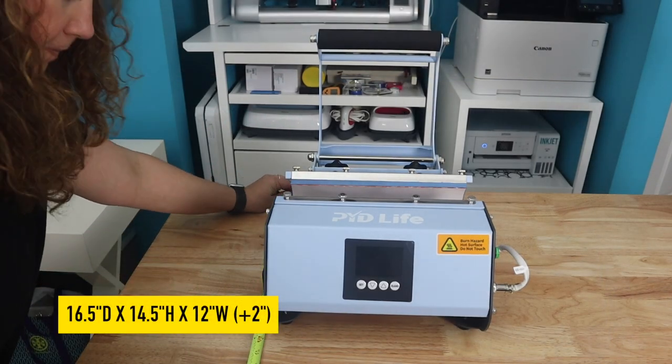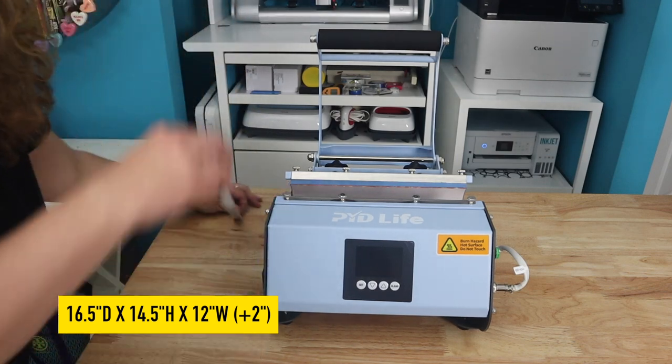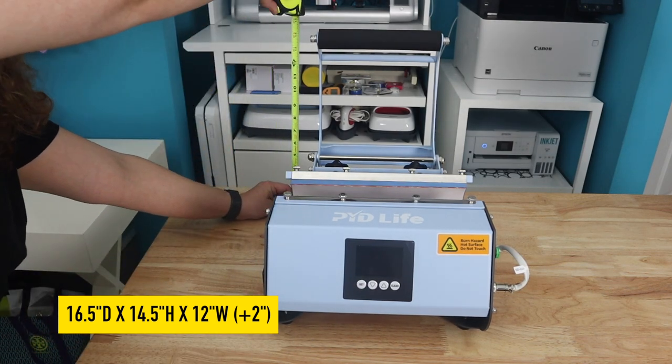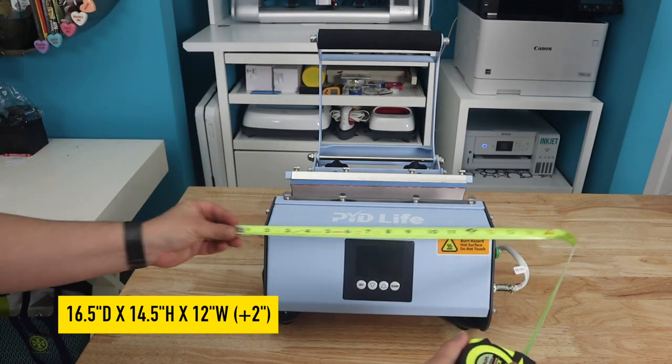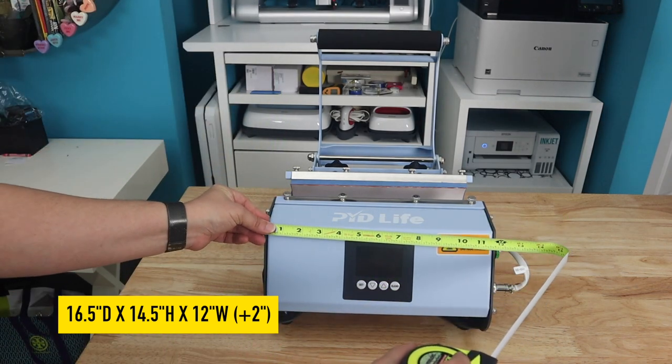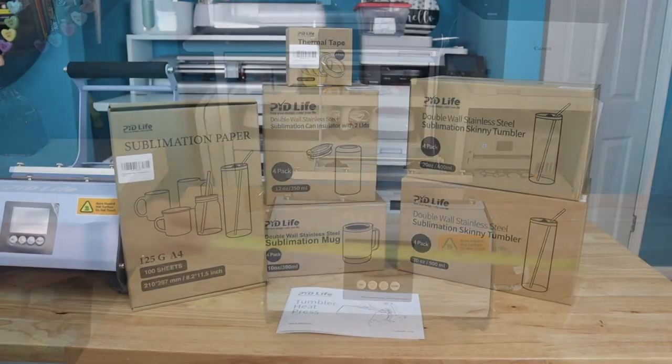We're going to go ahead and run through the dimensions real quick. We have 16 and a half inches deep, 14 and a half inches high with the handle all the way open. It is 12 inches wide, at least the machine is, but you want to give an extra couple inches for that cord so you're not smashing it.